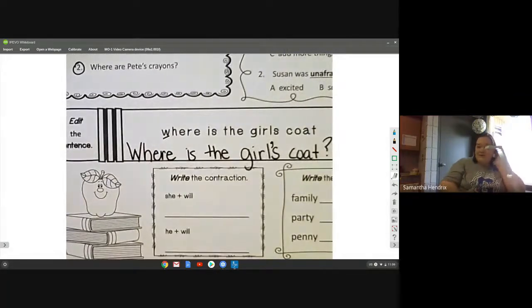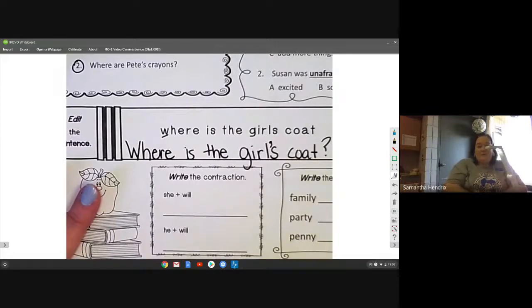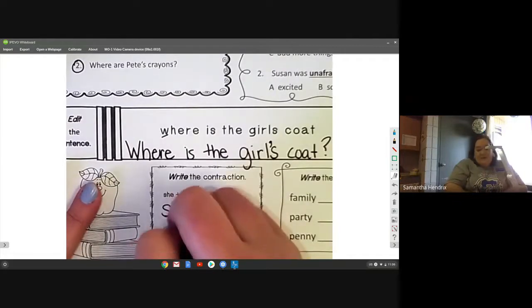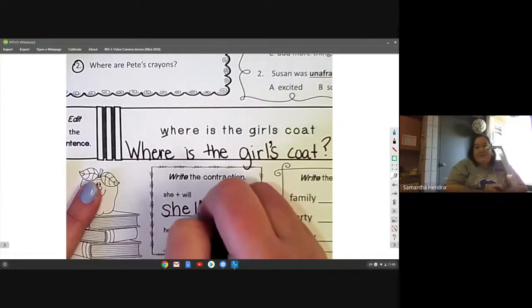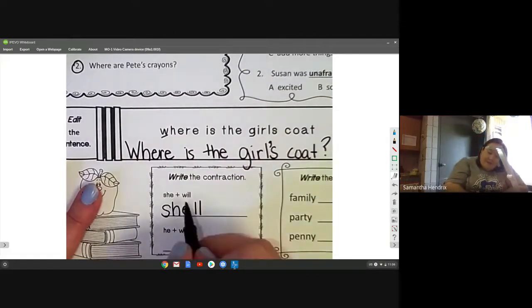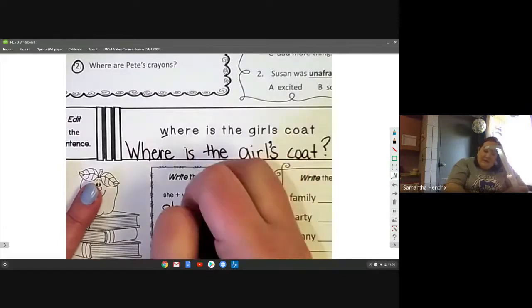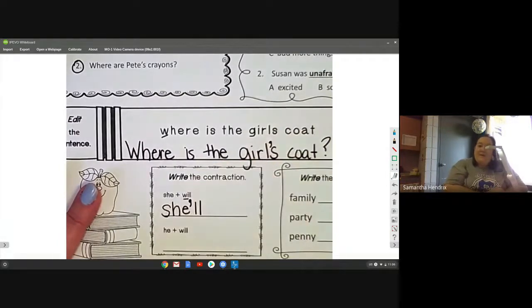Let's look at our contractions this week, or today, excuse me. She will, this is going to become she'll. Now let's look, what two letters did I take out? I took out the W and the I, and so my apostrophe is going to go right there because that's where I took those letters out. He will.